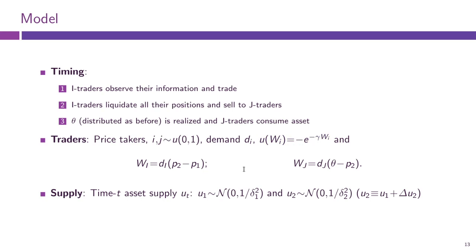The wealth entering the utility function for traders I is given by D_I times (P2 minus P1): traders I submit demand D_I, pay price P1 for buying the asset, and receive price P2 when they sell. This is their net wealth gain and they get exponential utility from consuming that extra wealth. For J agents, they submit order D_J, pay price P2, and get value theta per unit of the asset they end up with. These W's and D's have small subscripts — they are values for each individual trader, not aggregate values.